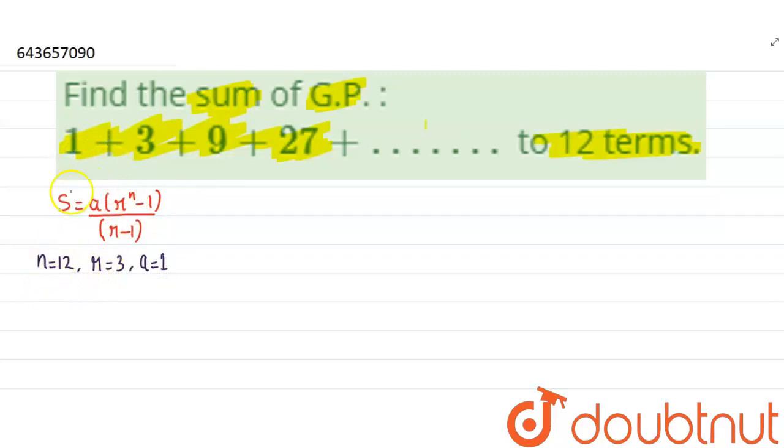Okay, so now we can fill the entries here. S equal to 1 times 3 to the power 12 minus 1 divided by 3 minus 1.